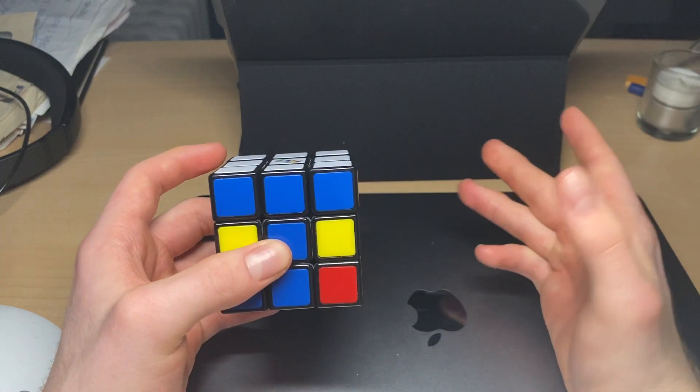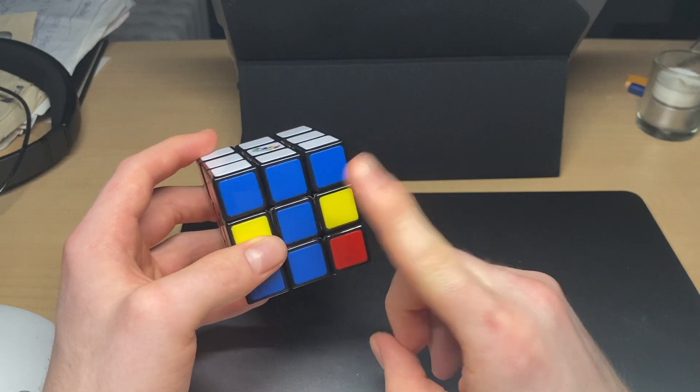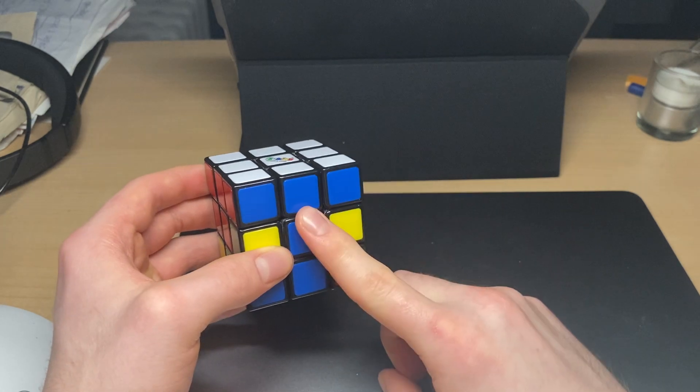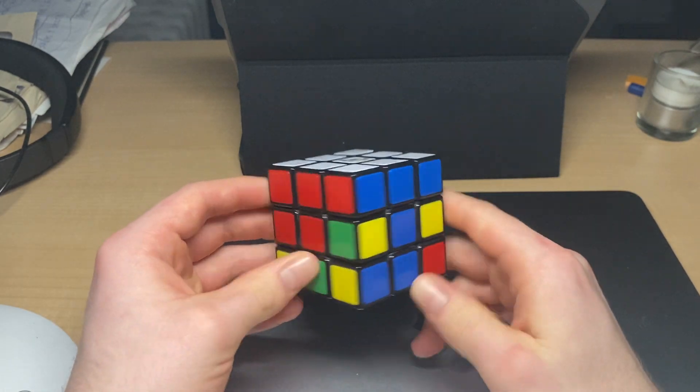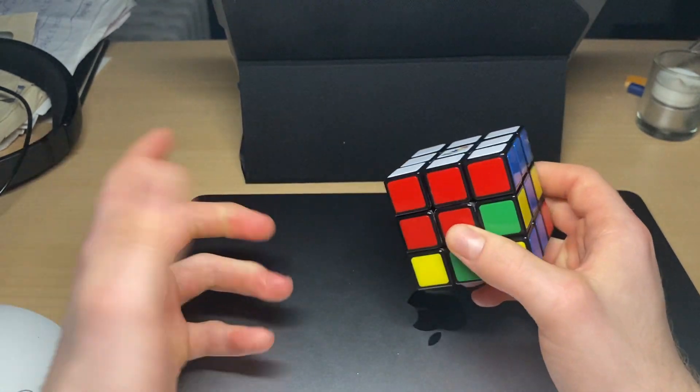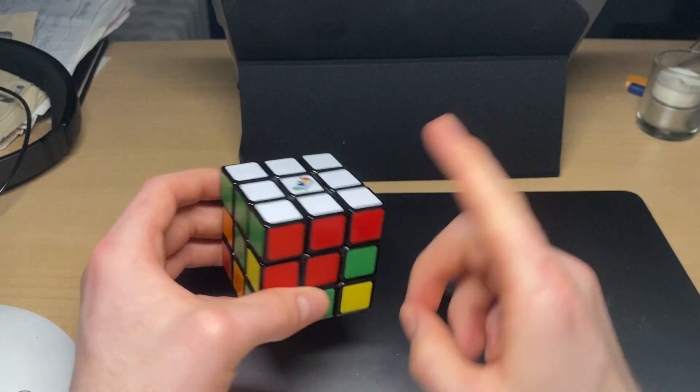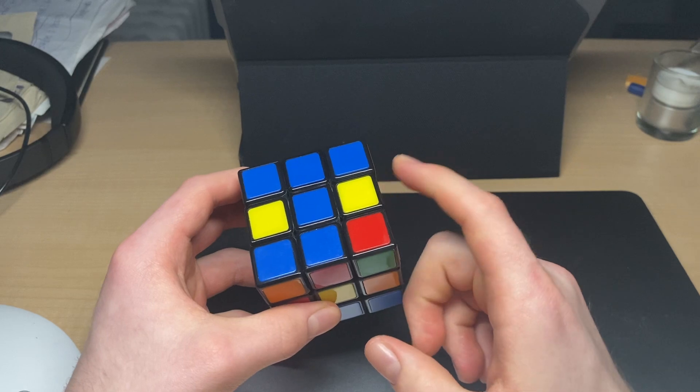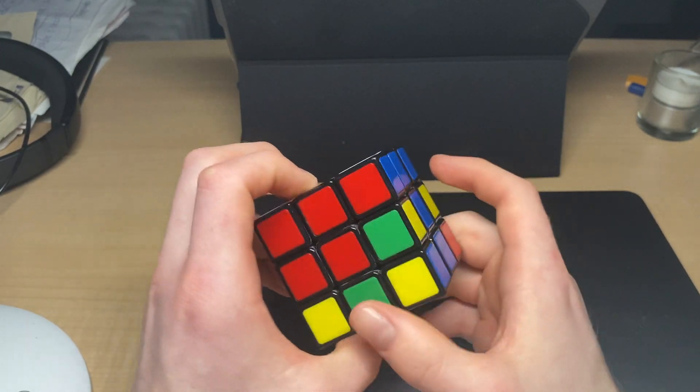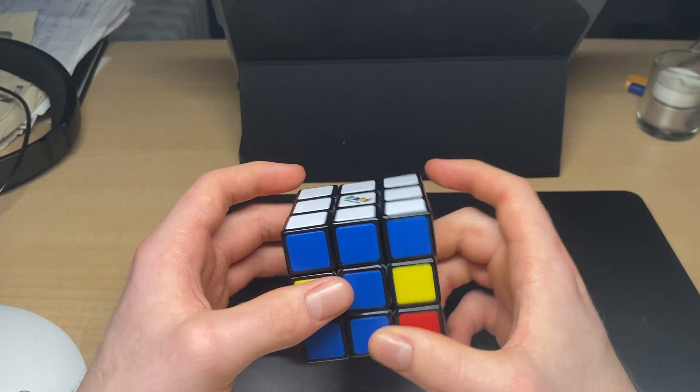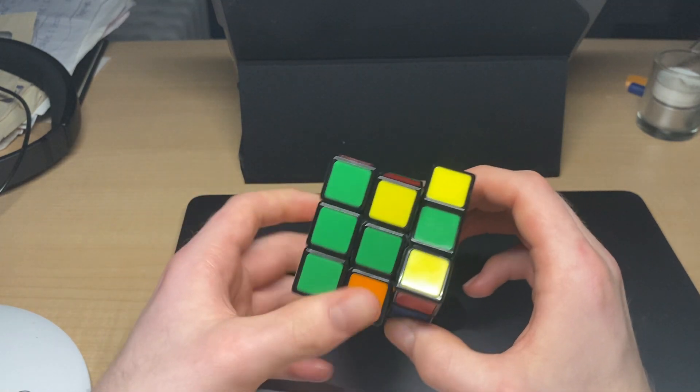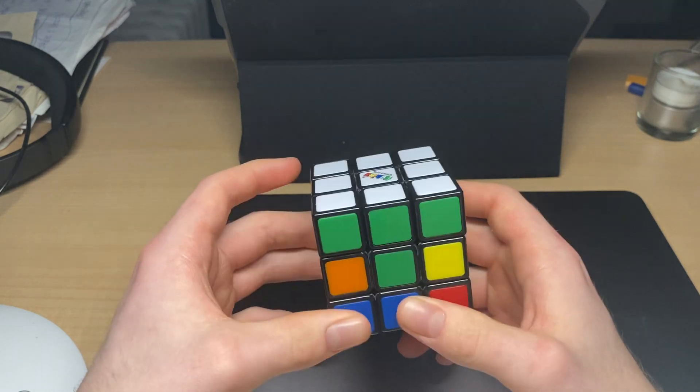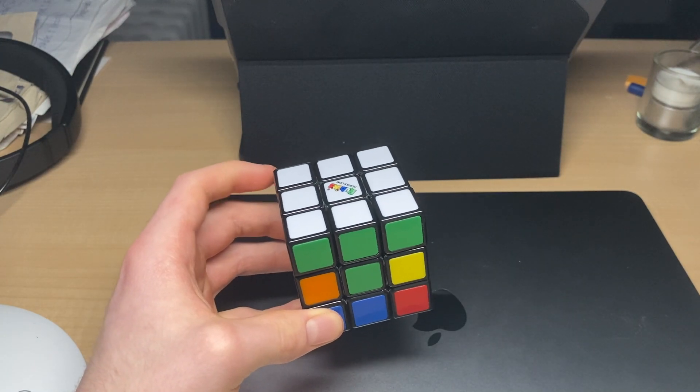So let's recap. You've oriented yourself with the colors of the cube, you're starting to get familiar with the notation for the algorithms, and you've learned now how to put in the corner pieces for the beginner method. Next is putting in these edge pieces, which will complete F2L, which stands for first two layers. But I do it all at the same time. We'll get there. See you in the next video.